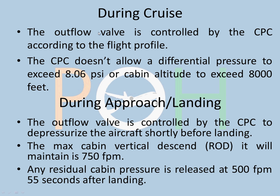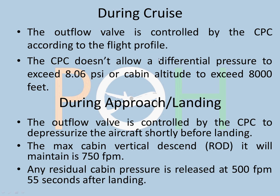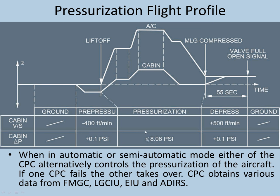During cruise, the outflow valve is controlled by the CPC according to the flight profile — it will adjust cabin altitude as required depending on whether you are climbing or cruising. An important point: the CPC does not allow differential pressure to exceed 8.06 PSI, which is the structural limit Airbus has designed for this aircraft. It will also not allow cabin altitude to exceed 8,000 feet — those are the maximum limits, as you can see in the diagram.